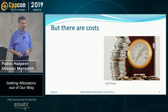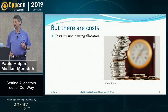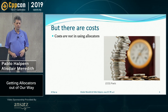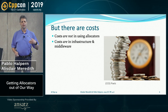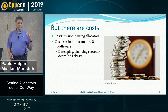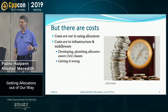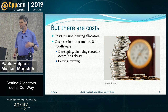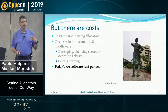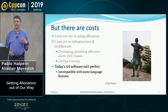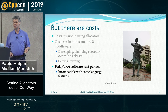But there are costs. The costs are not generally in using allocators — we just saw that three lines gave us this great speedup, and we were actually able to allocate off the stack. We could have used a different resource to get different properties. The major costs are in the infrastructure and middleware that develops the allocator-aware classes. If you get it wrong, there are costs to that. Anything that makes it more complicated to use allocators or to build your types means you're going to introduce new bugs. And even if you have good allocator-aware software already, it's incompatible with certain language features.